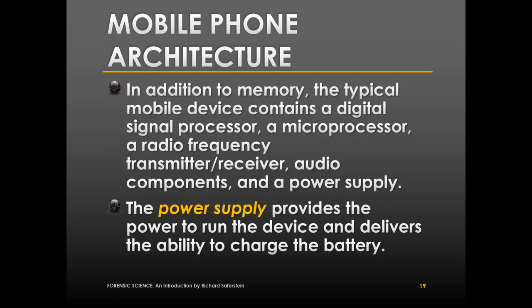In addition to memory, a typical mobile device contains a digital signal processor, a microprocessor, a radio frequency transmitter/receiver, audio components, and a power supply. The power supply provides the power to run the device and delivers the ability to charge the battery.